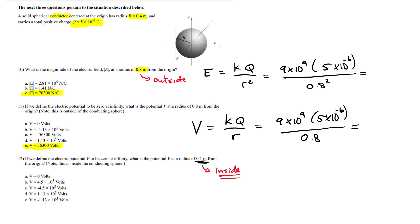What is the potential at a point that is inside the sphere? When you calculate the potential inside a conducting sphere, you don't choose KQ over the distance R from the center. The whole sphere is an equipotential, and the value of the potential is whatever value you have at the surface — that is going to be the value of the potential at any point inside.